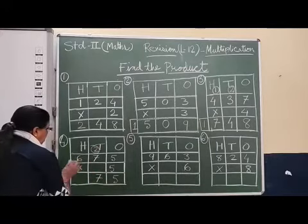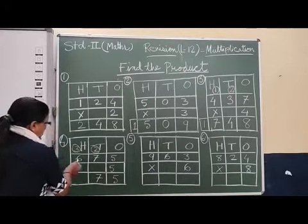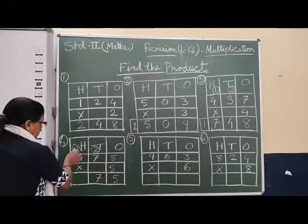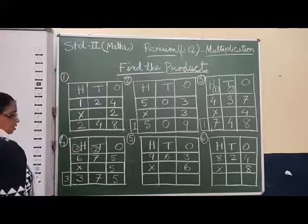Thirty-seven here. Seven I will write here, three I will write here. Then six times five, thirty, plus three, thirty-three. We will increase and write fifty-three here. Clear?